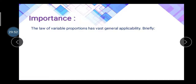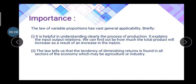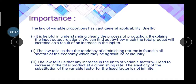The importance of the law of variable proportion: It helps in clearly understanding the process of production and explains input-output relations, so entrepreneurs can identify when production value is diminishing or negative. It shows by how much total production increases as input increases. The law demonstrates the tendency of diminishing returns found in all sectors of the economy — agriculture and industry alike. Any increase in units of the variable factor leads to an increase in total production at a diminishing rate.